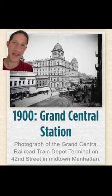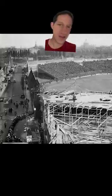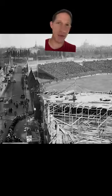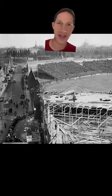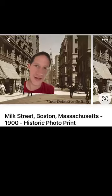This is the construction of the Brooklyn Bridge in 1881. This is Grand Central Station in 1900. Here is the construction of Fenway Park in Boston in 1914. Here's Boston in the year 1900. Here's Detroit in 1888.